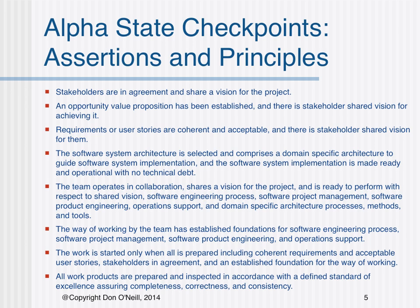Number six, the way of working by the team has established foundations for software engineering process, software project management, software product engineering, and operations support. Number seven, the work is started only when all is prepared, including coherent requirements and acceptable user stories, stakeholders in agreement, and an established foundation for the way of working.